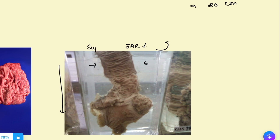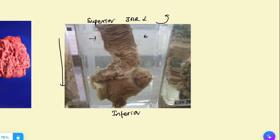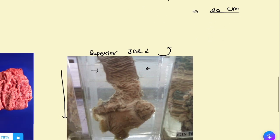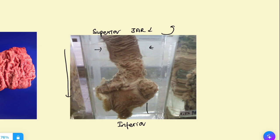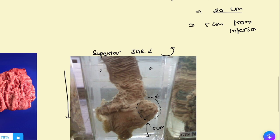Then use anatomical and medical terminologies to describe the specimen. I would say, 'This is the superior aspect' and 'This is the inferior aspect.' I will not say lateral and medial for a jar-mounted specimen. I would say approximately 20-centimeter cut-open specimen of an intestine where, close to approximately five centimeters from the inferior end, there is an ulceroproliferative lesion. You have to tell the examiner exactly where the lesion is.